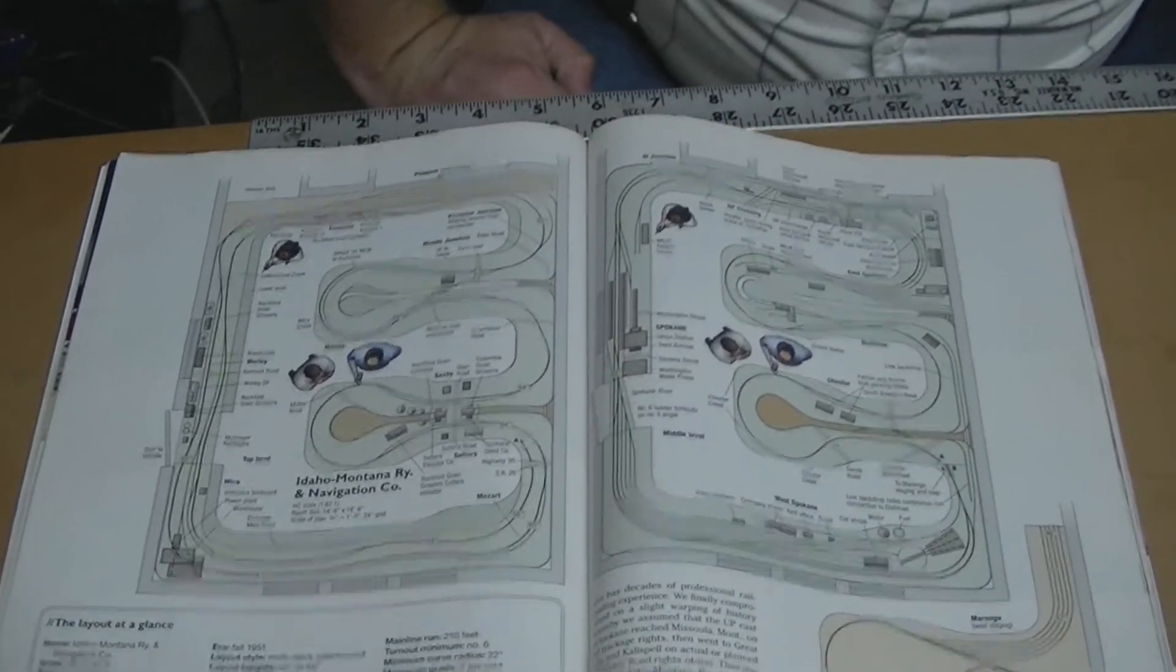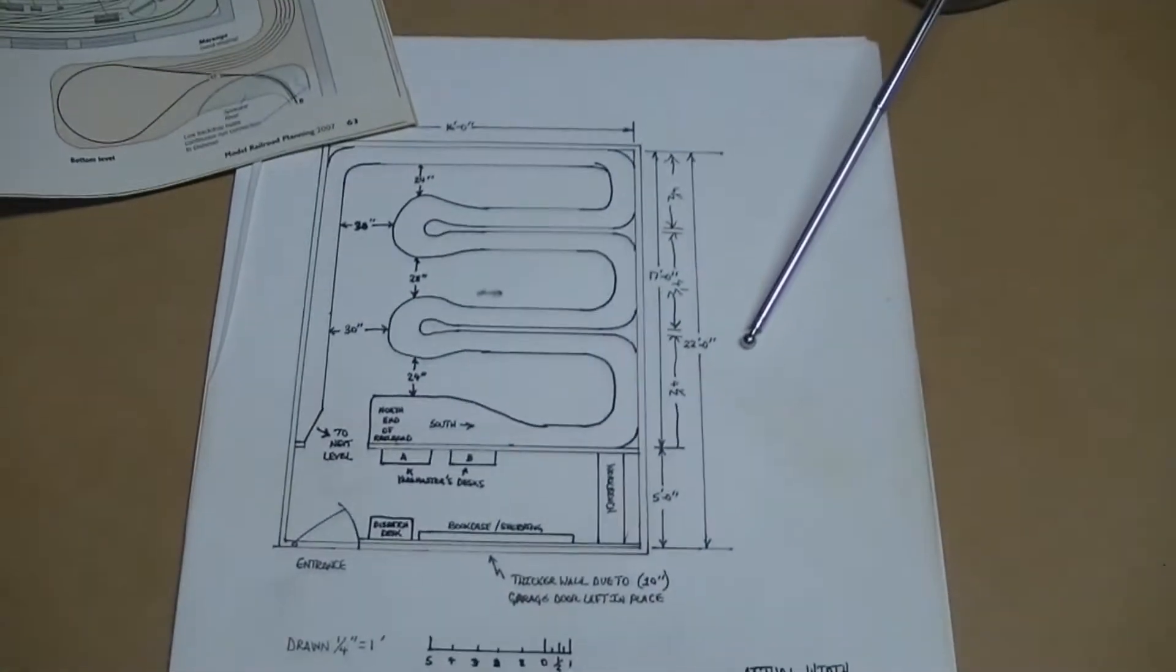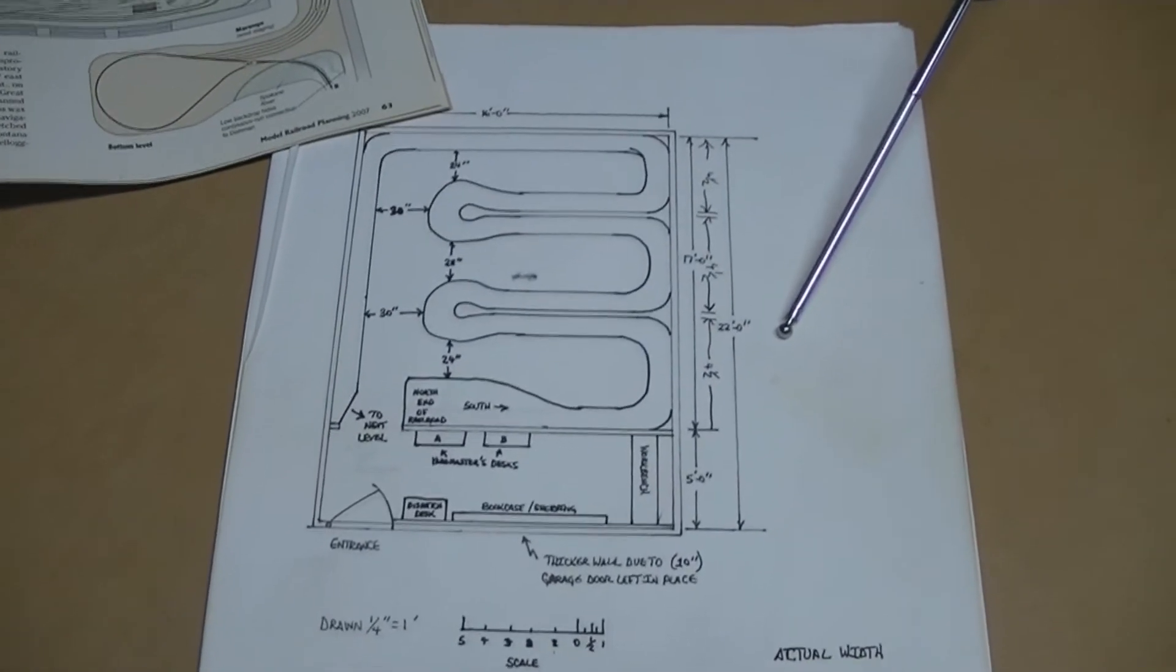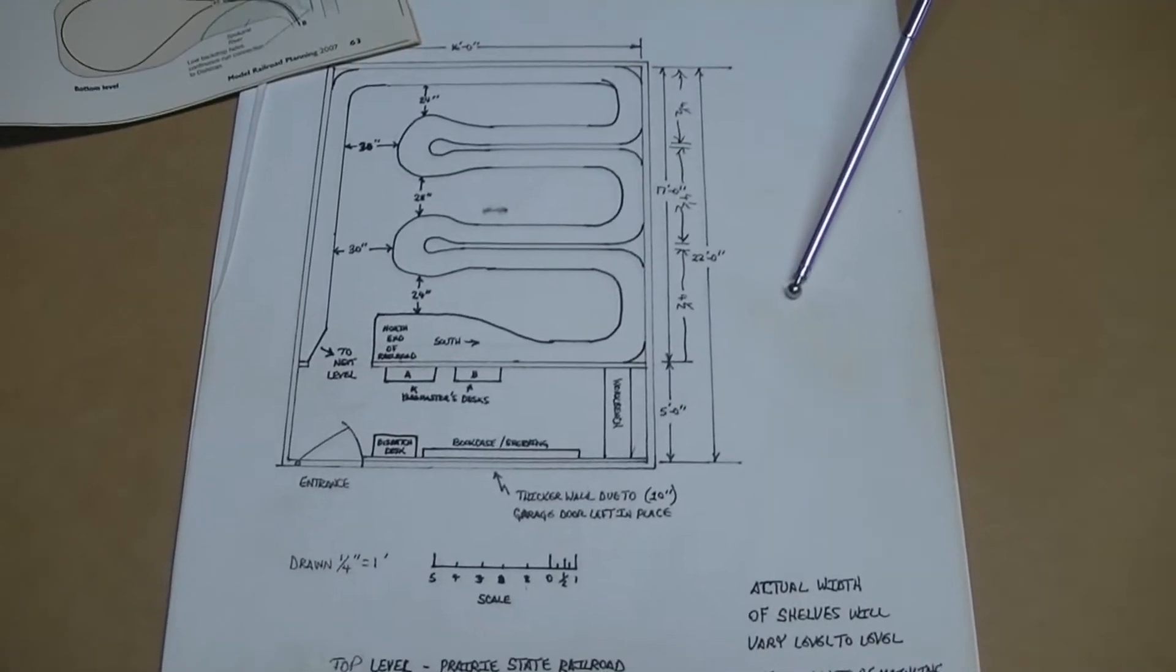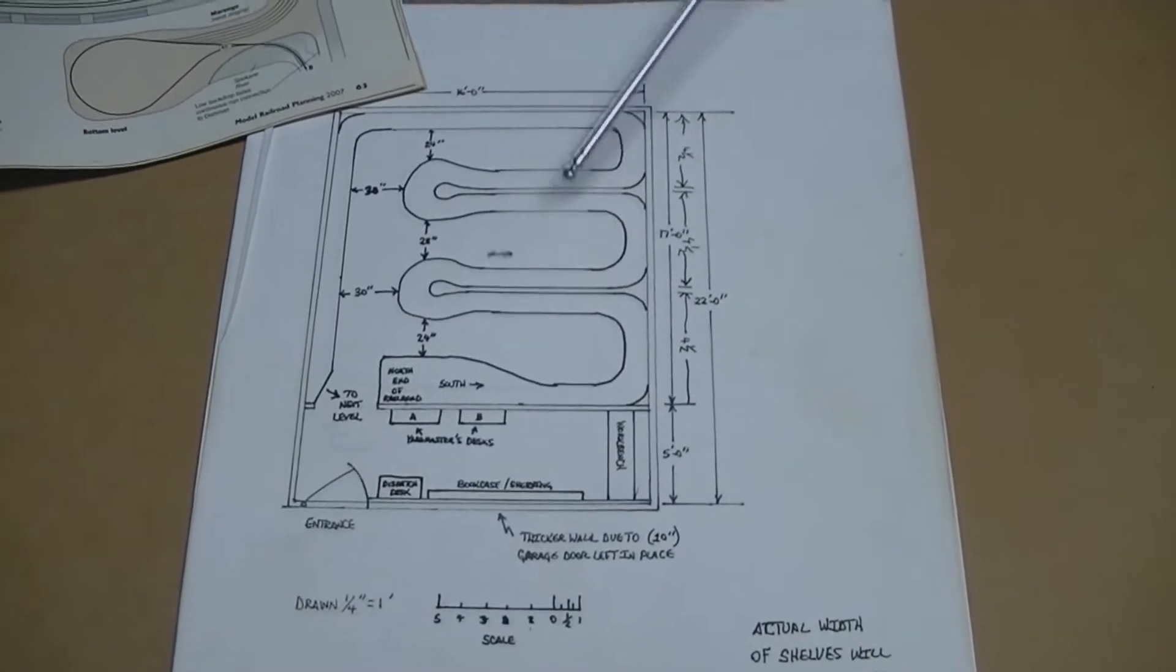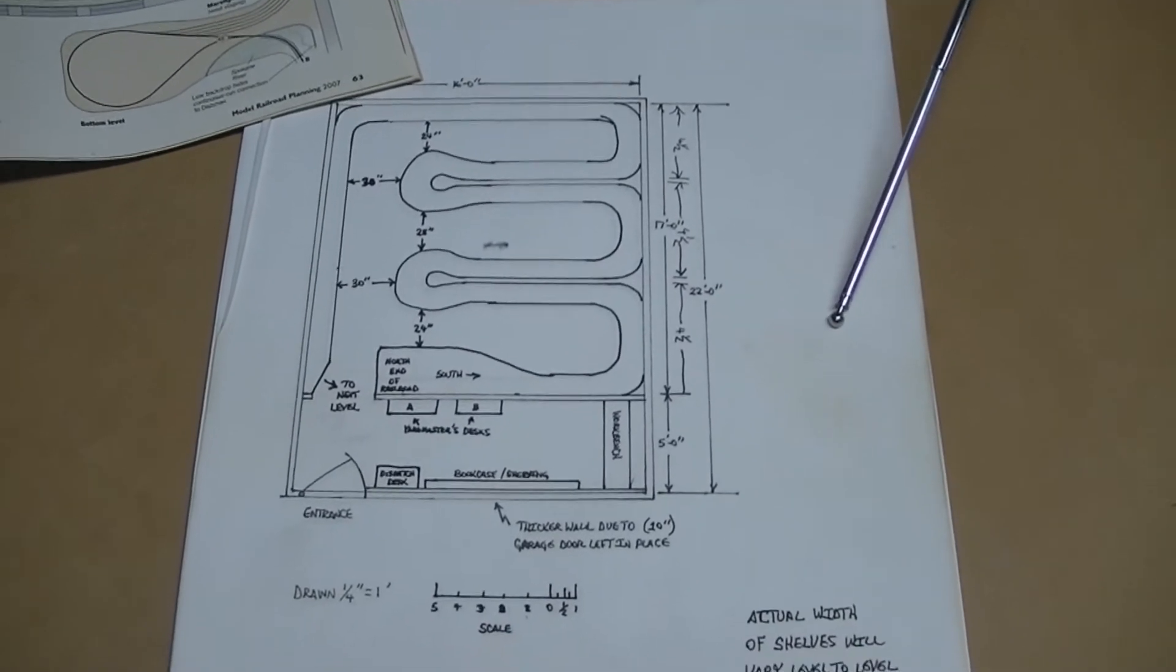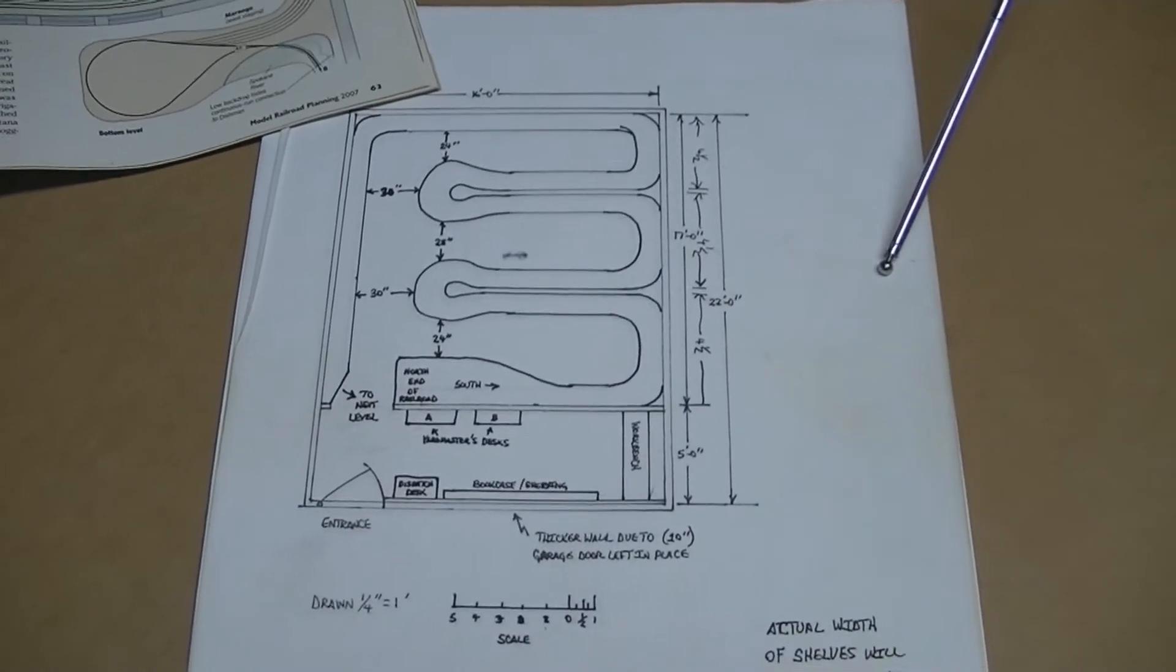Basically the same size room. He was using a 14 foot 6 inch by 18 foot 6 inch room. I'm using a 16 by 17 foot room. The aisles are a little narrower, but even after talking to Tony Custer and Dave Clemons they decided it could be done.